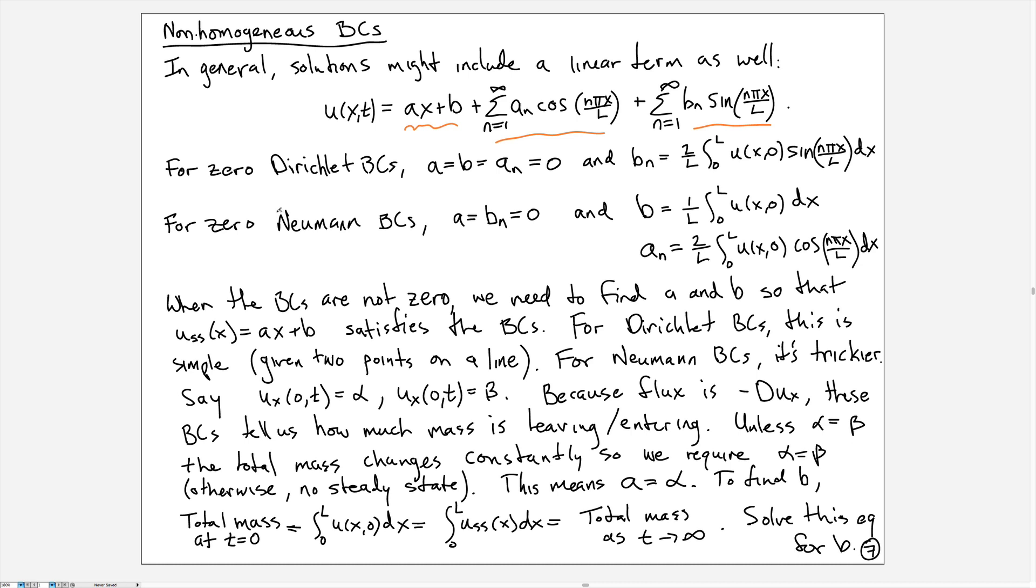To see how this more general case of non-homogeneous boundary conditions fits in with what we've already talked about for zero Dirichlet boundary conditions, we just choose a = b = 0 along with all of the a_n, because the ax + b form, the steady state for the zero Dirichlet boundary conditions, is just a zero function.